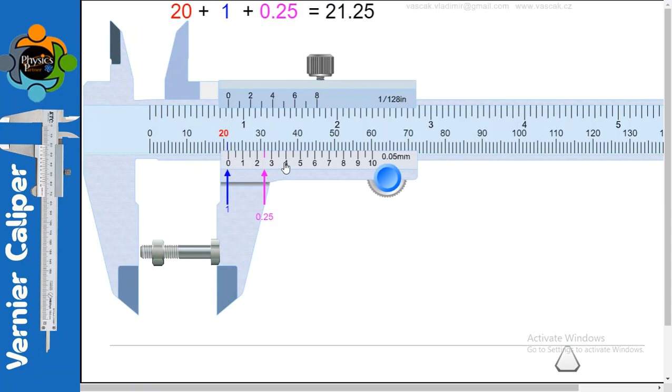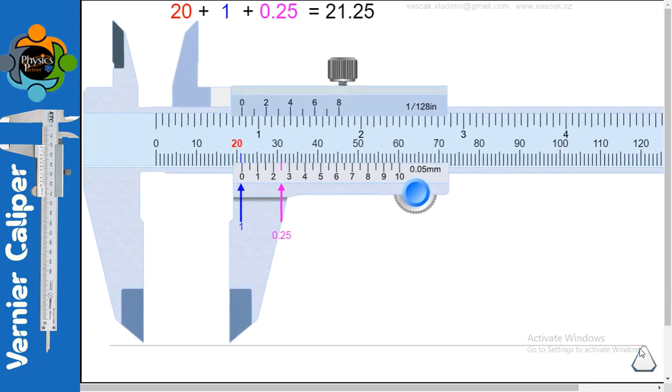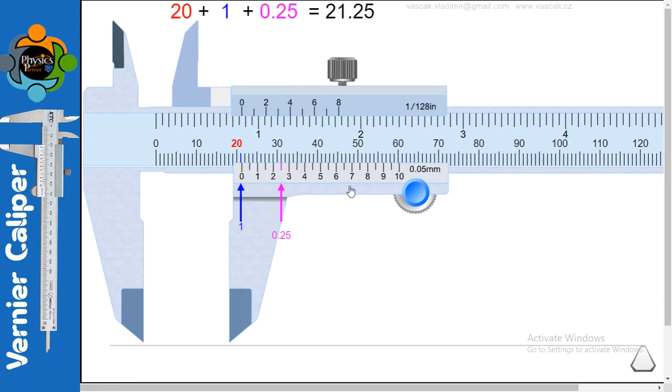What is 0.25? 0.25 is the most matching line here. Let me make it more closer to you. 0.25 here is most matching line of vernier scale with the main scale. You can see here 0, 1, 2, and 2.5. Because it is in millimeter and 0.05 is a least count, it is considered as 0.25. This line is completely matching with the main scale.